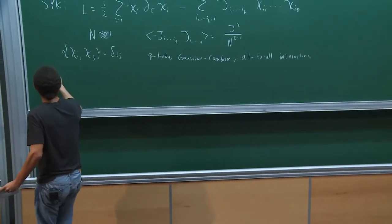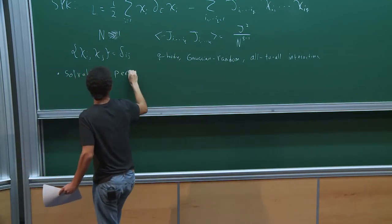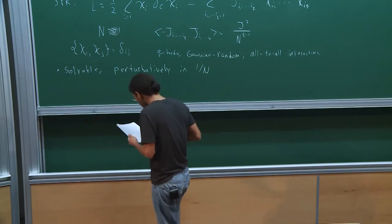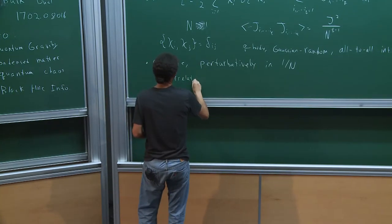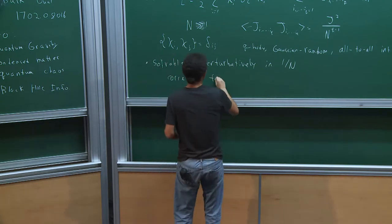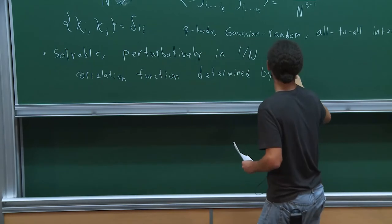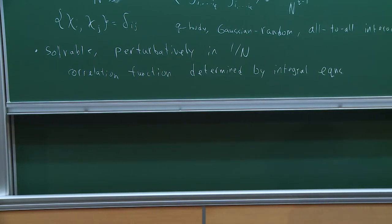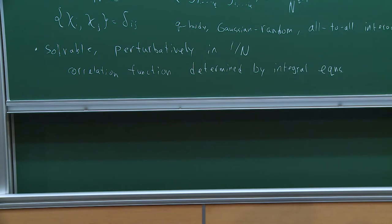The surprising feature of the model is that it's solvable — perturbatively in one over N. By solvable, I mean the correlation functions can, in principle and in practice, be determined by integral equations. For instance, working at leading order in one over N, one can write down an integral equation for the fermion two-point function, which you can then solve numerically, or in the UV and IR one can write down an analytic solution.